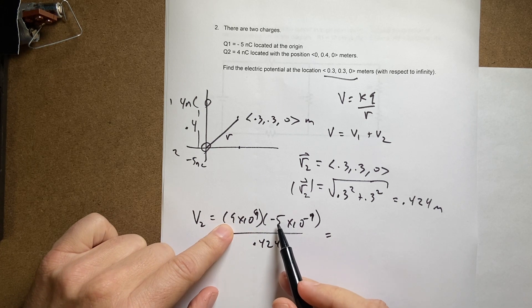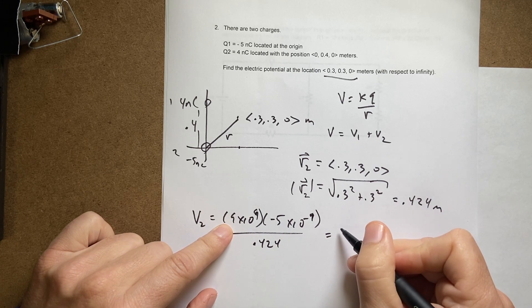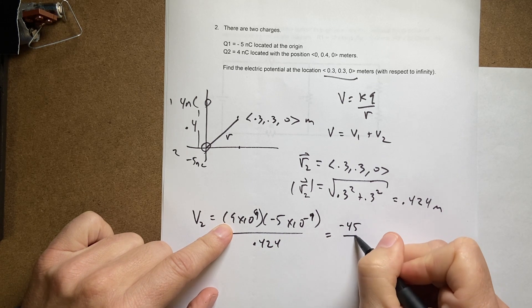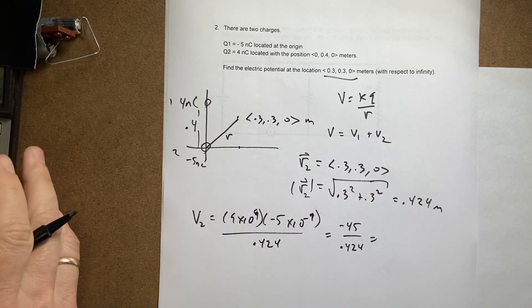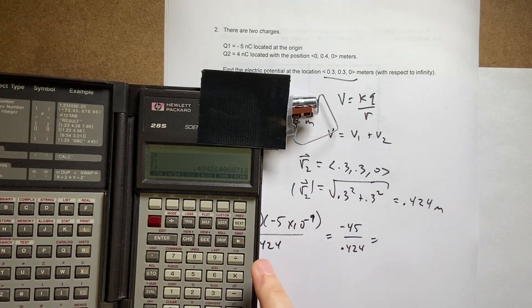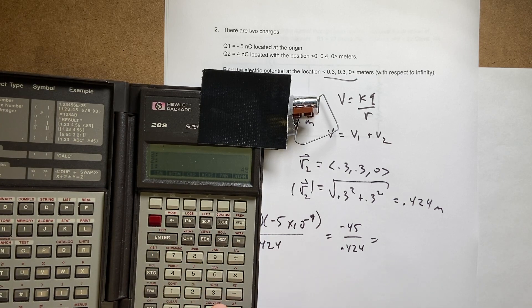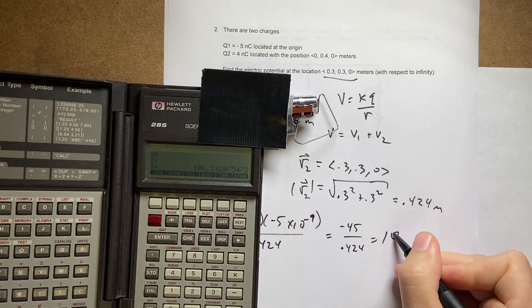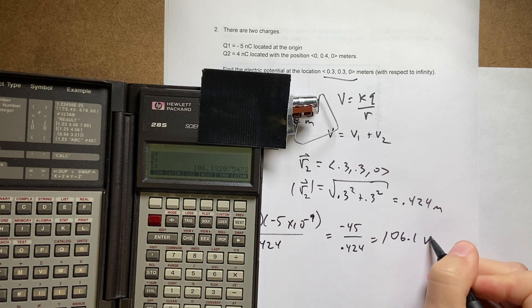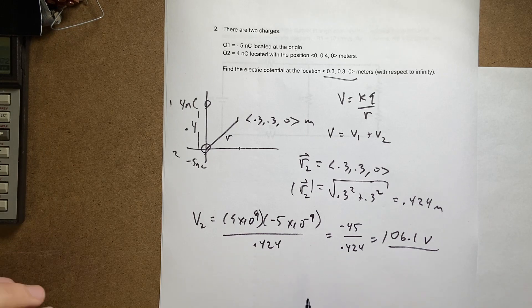So I can just say 9 times negative 5 which is going to be negative 45 divided by 0.424. Now I'll put that in my calculator. You can do it the other way if you want, it doesn't matter. 45 divided by 0.424 and I get 106.1 volts. That's V2.